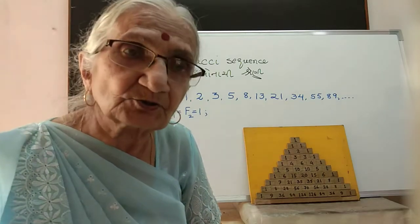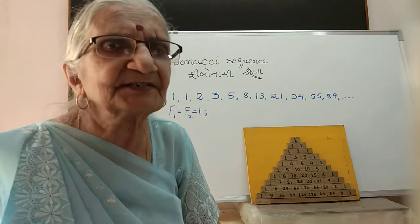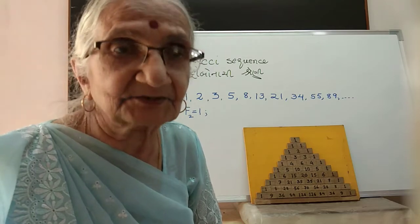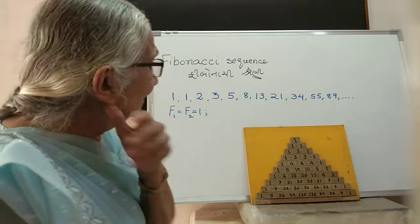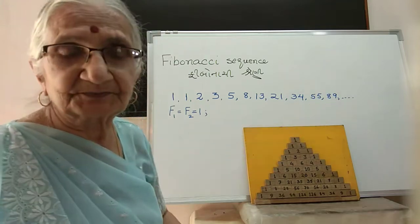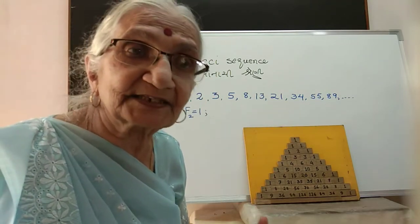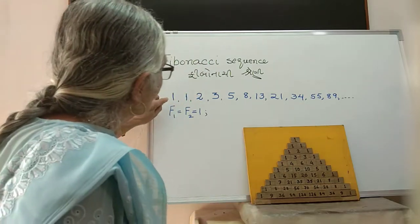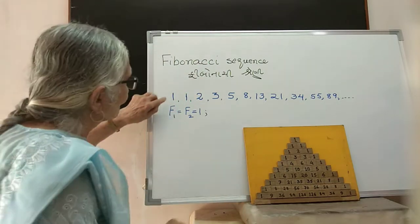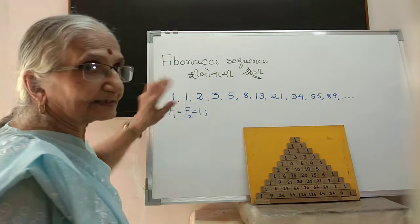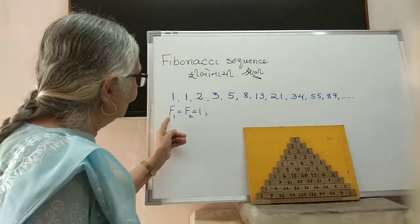We start with a very simple relation that it has with other numbers, but before that let us see how this is formed. It is defined like this: the first is 1, the second is 1—that's given. F1 equals F2, where F is for Fibonacci.